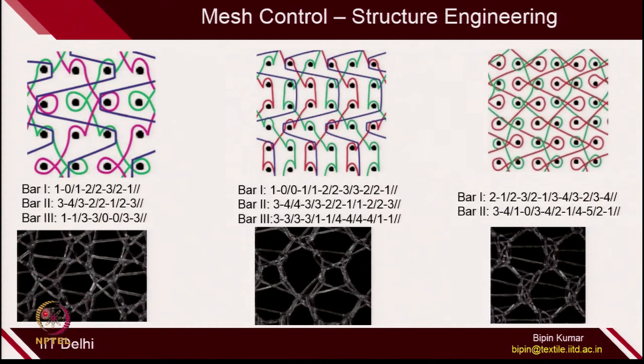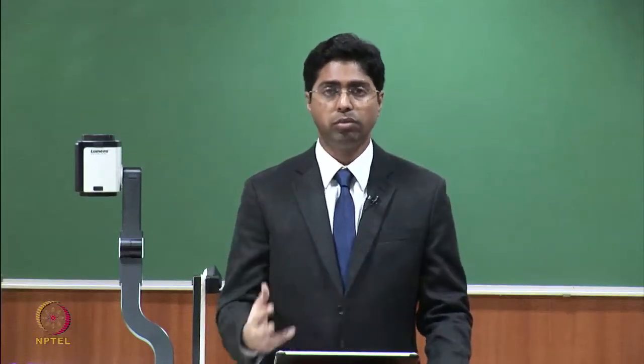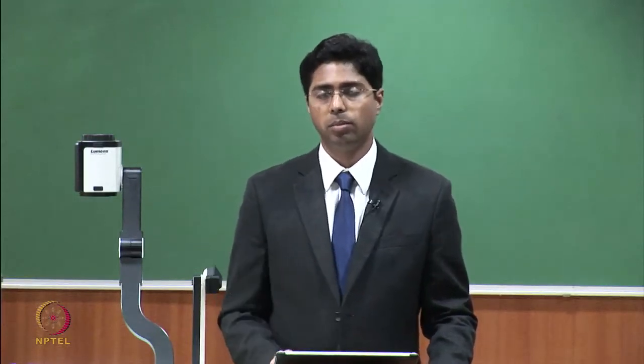Sometimes you can also have more random types of meshes using 3-bar structures. Here you are intentionally decreasing the size of the holes because it helps in cell growth. Once you design these meshes, you can collaborate with medical professionals to create these meshes and see how the cells are growing on these surfaces. You need to understand multiple engineering disciplines — not only knitting, but also collaborate with medical professionals to do smart engineering in surgical meshes.